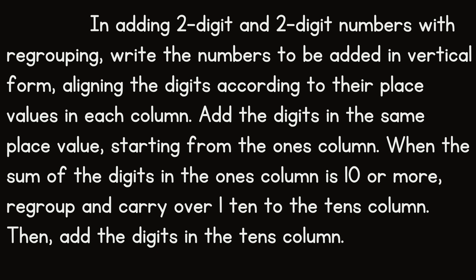In adding two-digit and two-digit numbers with regrouping, write the numbers to be added in vertical form, aligning the digits according to their place values in each column. Add the digits in the same place value, starting from the ones column. When the sum of the digits in the ones column is 10 or more, regroup and carry over 1 ten to the tens column. Then add the digits in the tens column.